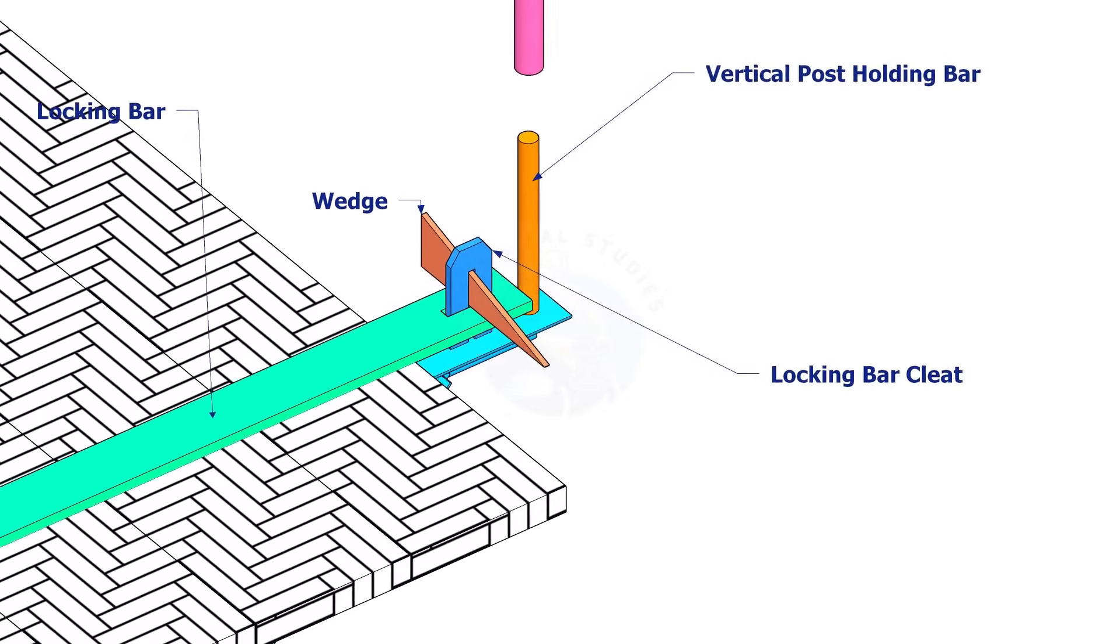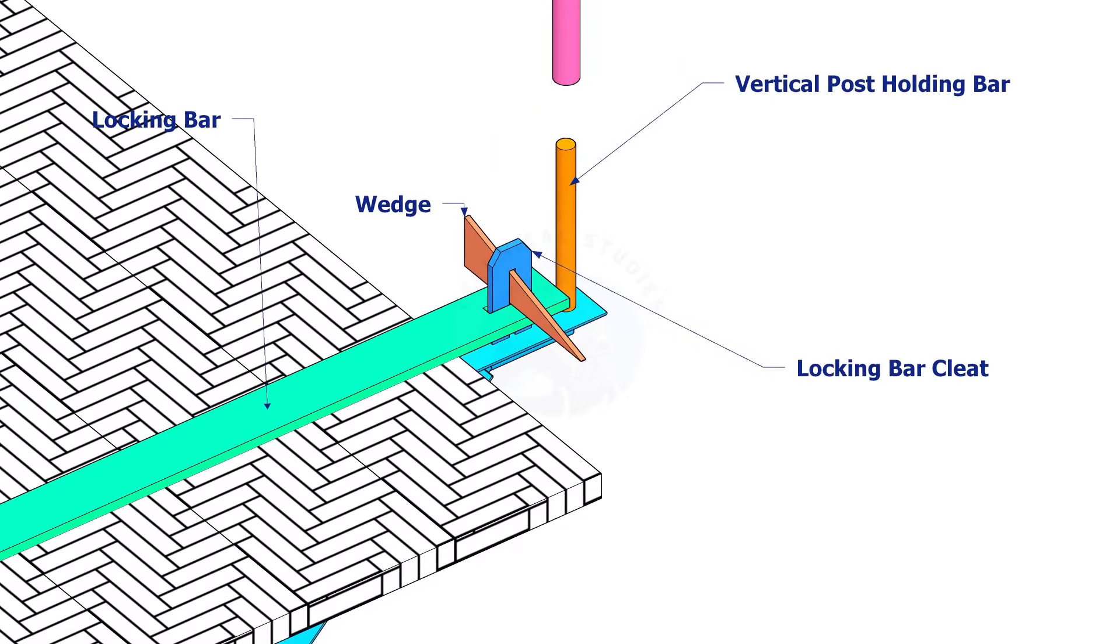Locking bar, locking bar cleat and the wedge are used to arrest the planks on the bracket.